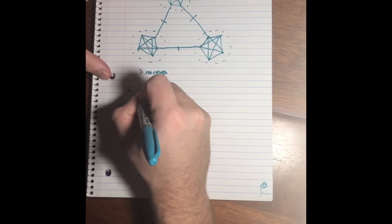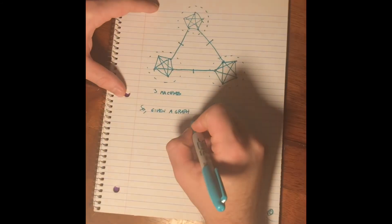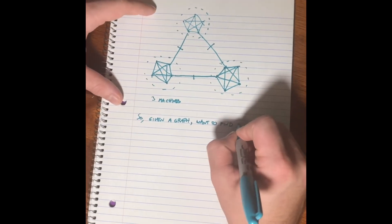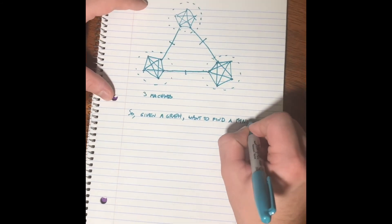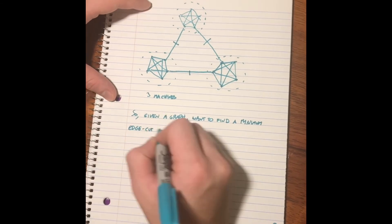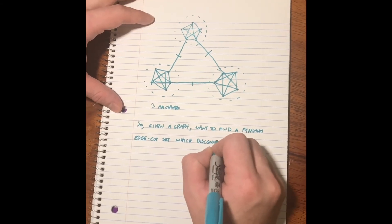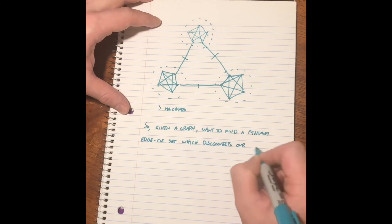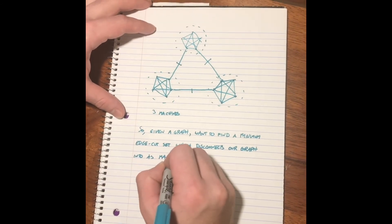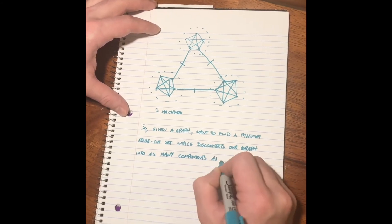So given a graph which represents a computational architecture, we want to find a minimum edge cut set which disconnects our graph into as many components as machines.